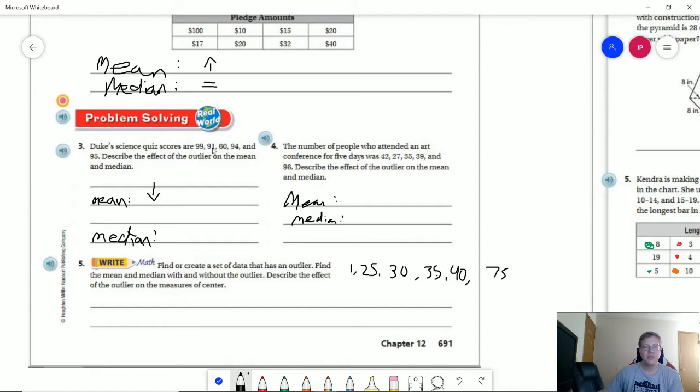Beforehand we would have had this be our first number and then our middle numbers would be 94 and 95. So we would go from 94.5 down to 94 because we go 60, 91, 94. So that one is also being lowered.